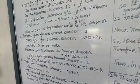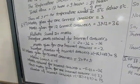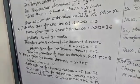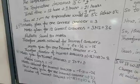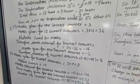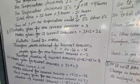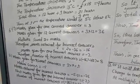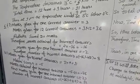Now question number 6: In a class test, plus 3 marks are given for every correct answer, and minus 2 marks are given for every incorrect answer, and no marks for not attempting any question. First: Radhika scored 23 marks. If she got 12 correct answers, how many questions has she attempted incorrectly? Second: Mohini scored minus 5 marks. In this test she got 7 correct answers. How many questions has she attempted incorrectly?